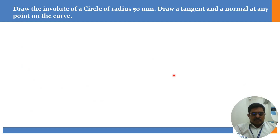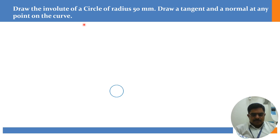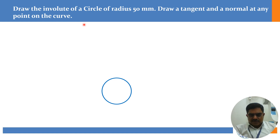So this is the problem statement: Draw the involute of a circle of radius 50 mm. Draw a tangent and normal at any point on the curve. As usual, we have to complete the problem by drawing the tangent and normal. So this is the circle — the radius of the circle is 50 mm.